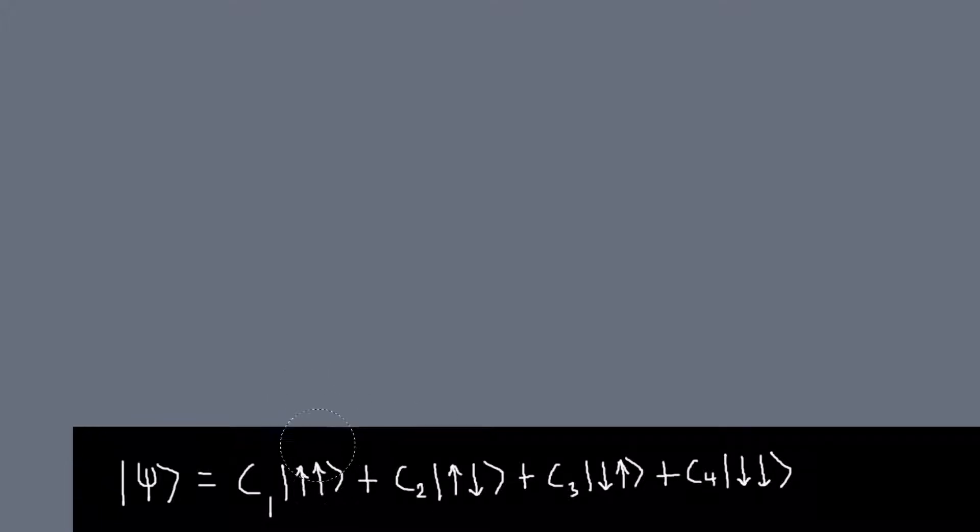Where these vectors just mean, this one means both particles are spin up, this one, first one is up, second one is down, and so on. So we have four possible combinations, and since these are our basis states, our most general state vector can be written as a linear combination of these four basis vectors.